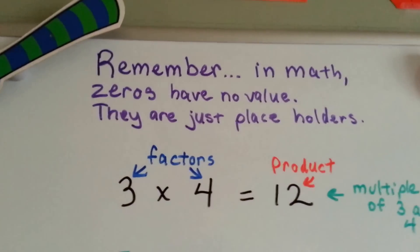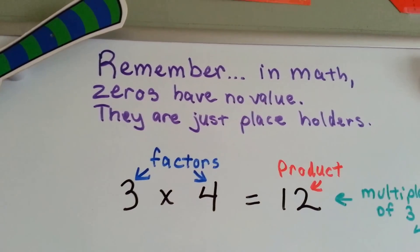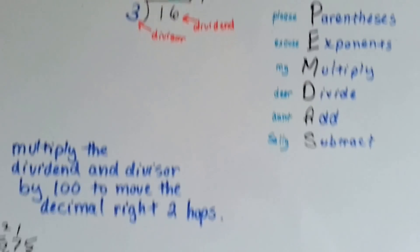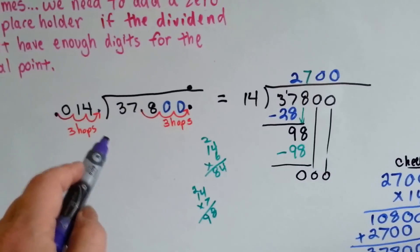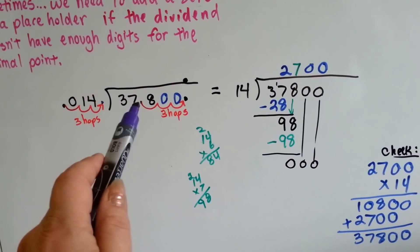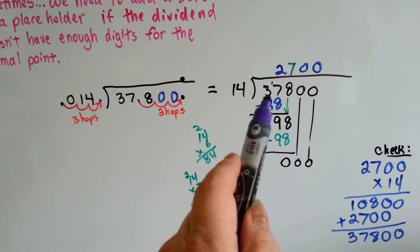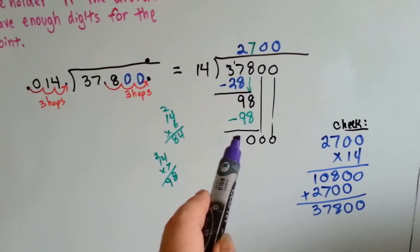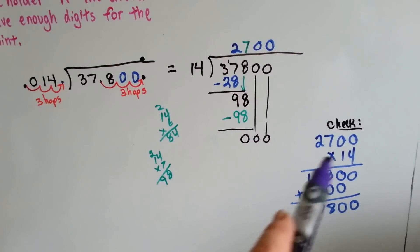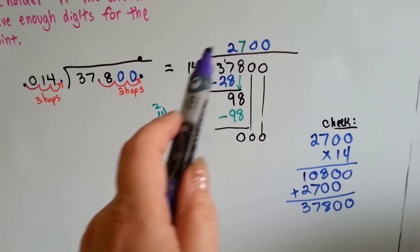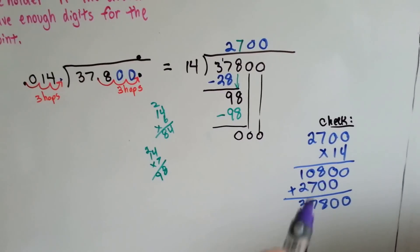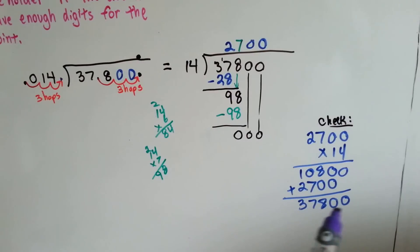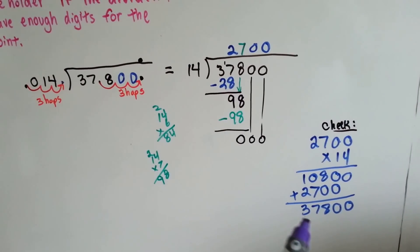Because remember what I always say, in math, zeros have no value, they're just placeholders, and they're really good placeholders, aren't they? So essentially what happens is our division problem ends up becoming 37,800 divided by 14. We do our multiplication of the quotient times the divisor to check it, and if it comes out as the same amount as the dividend, we know we did it correctly.